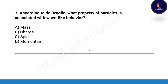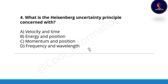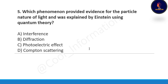Next question: according to de Broglie, what property of a particle is associated with wave-like behavior — mass, charge, spin, or momentum? Correct option is D, momentum. Next question: what is the Heisenberg uncertainty principle concerned with — option A: velocity and time, option B: energy and position, option C: momentum and position, option D: frequency and wavelength? The uncertainty principle is concerned with momentum and position, so option C is correct.